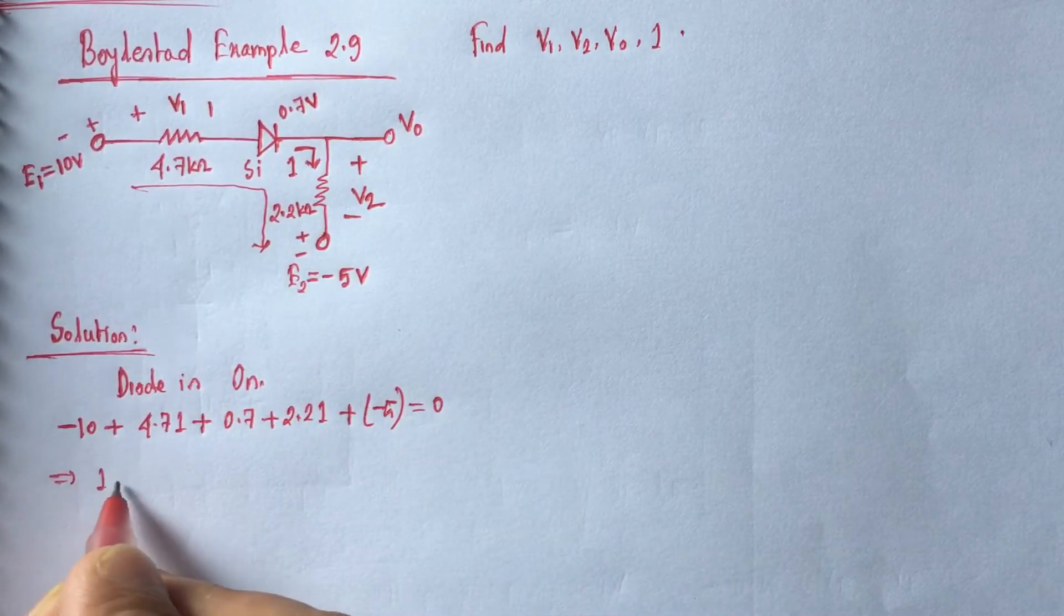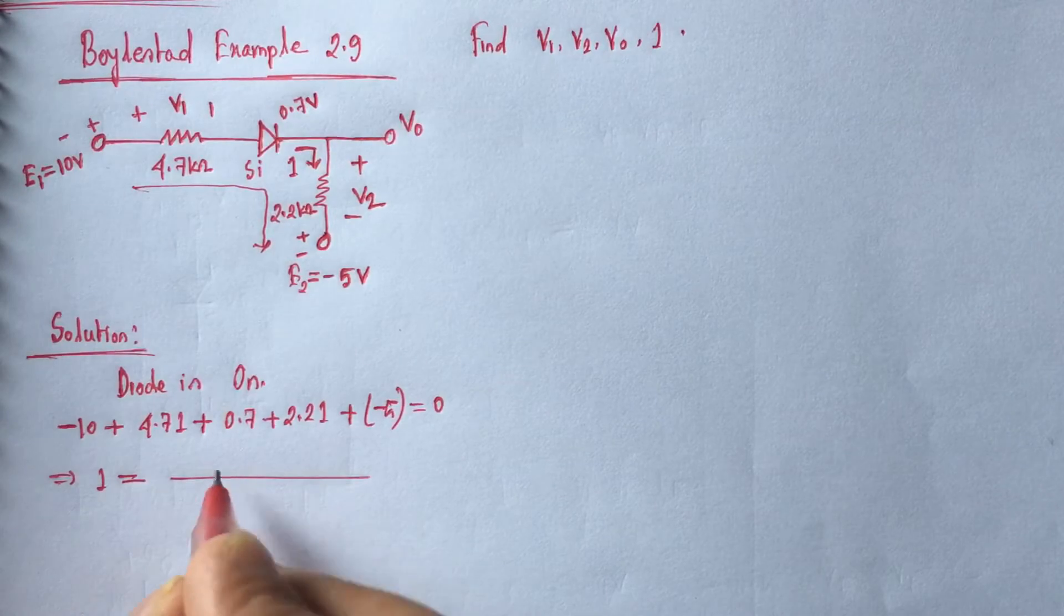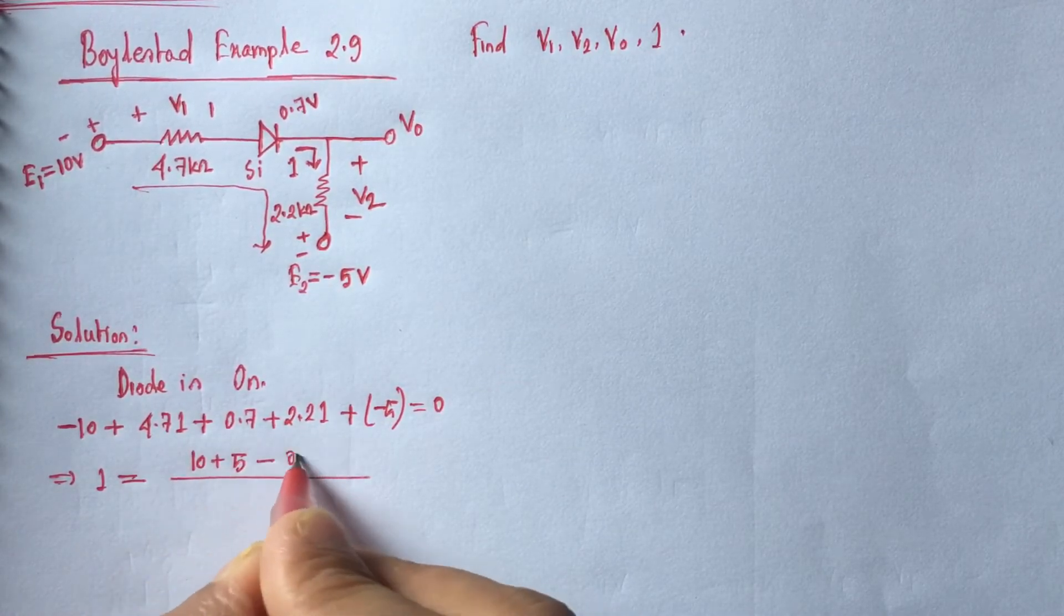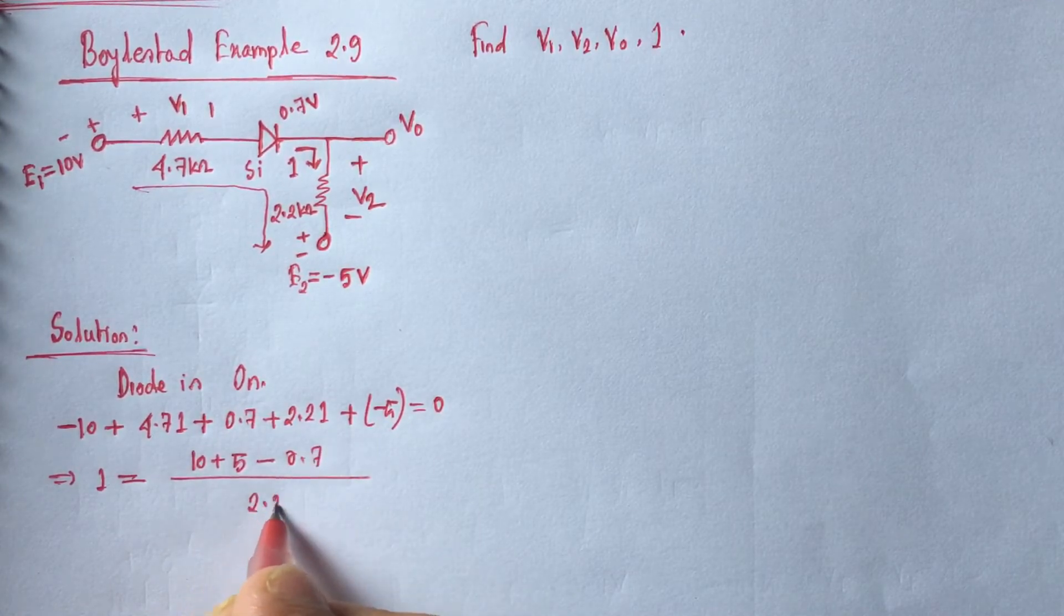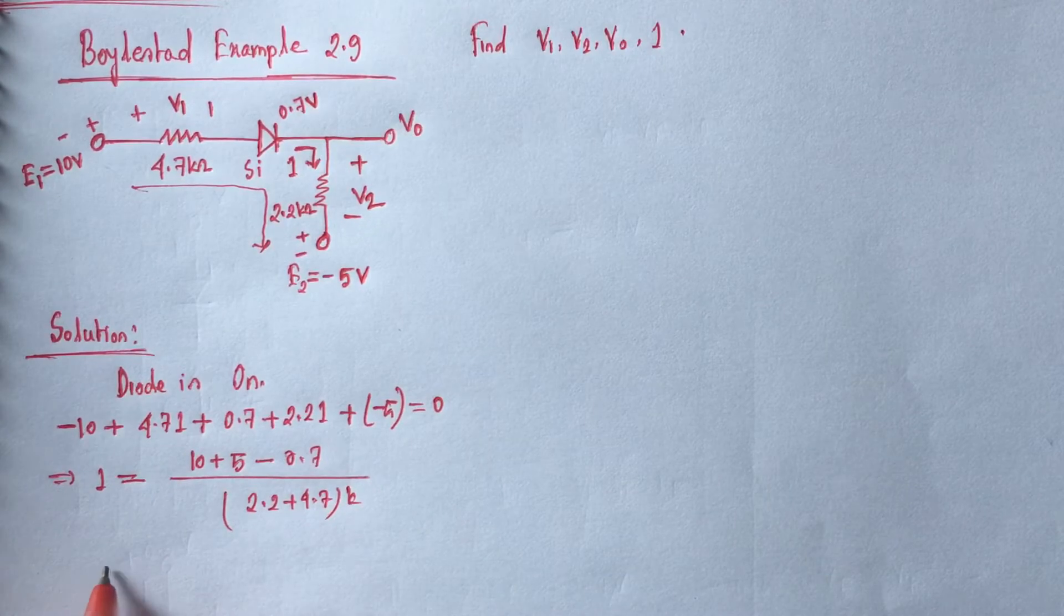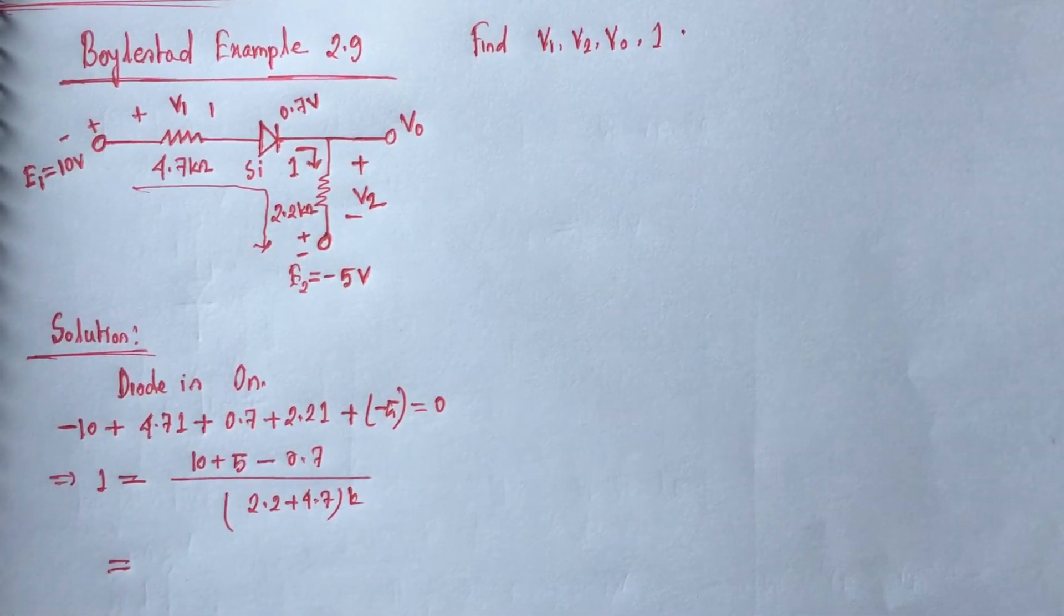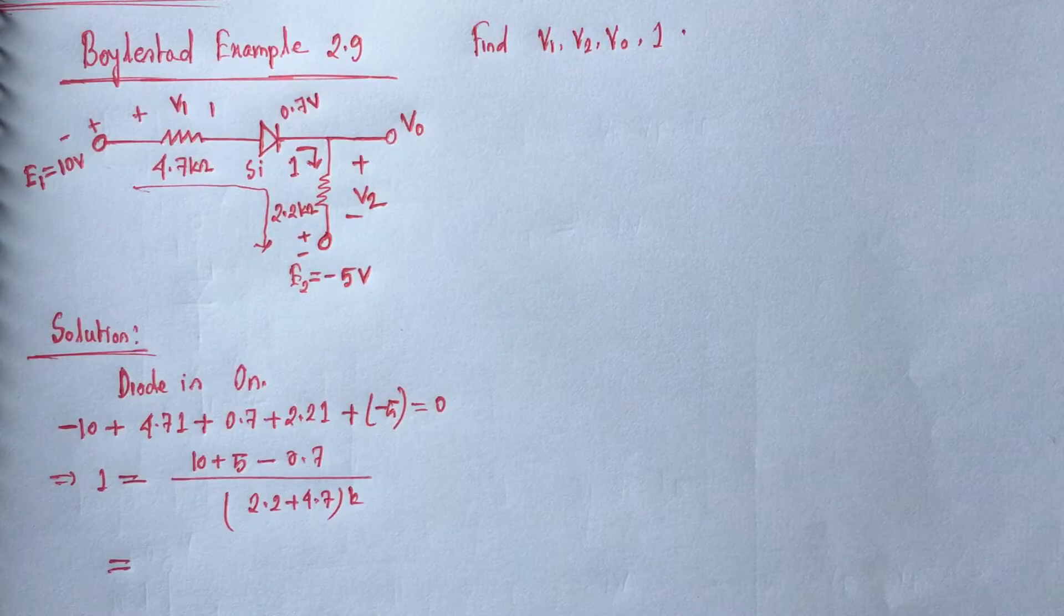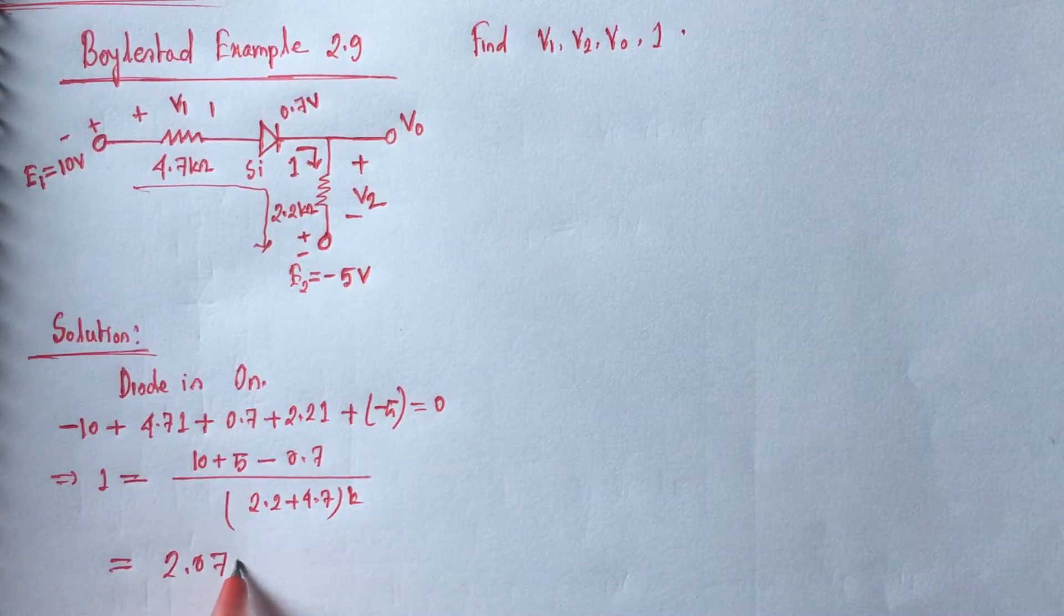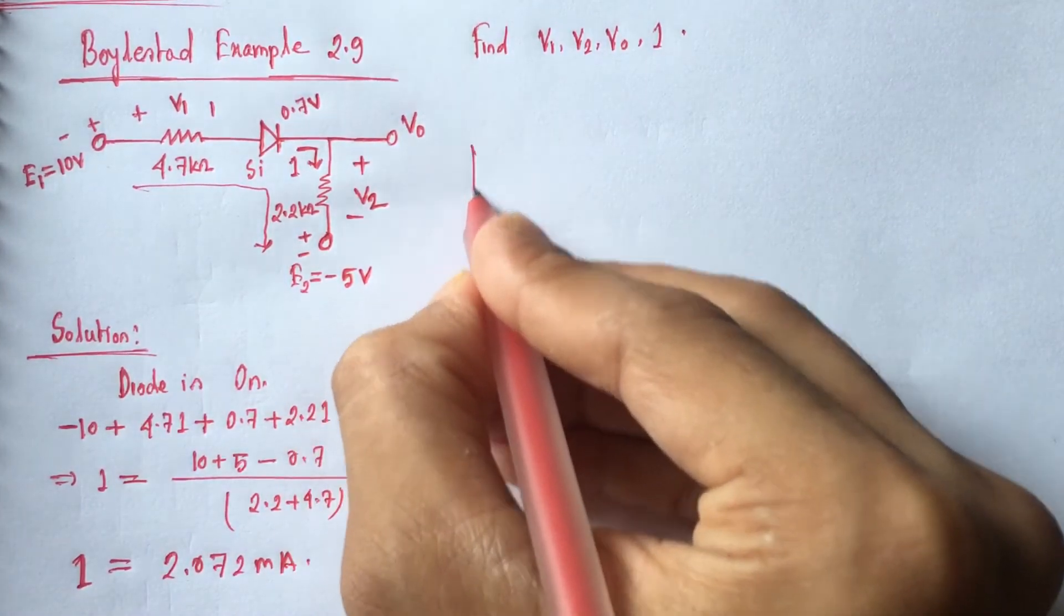Now we have I is equal 10 plus 5 minus 0.7 by 2.2 plus 4.7 K, that is 2.2 plus 4.7 K. That is 2.072 milliampere. So I is equal 2.072 milliampere.